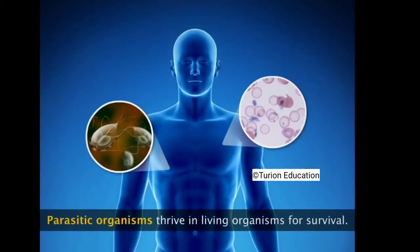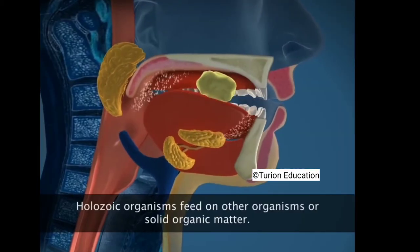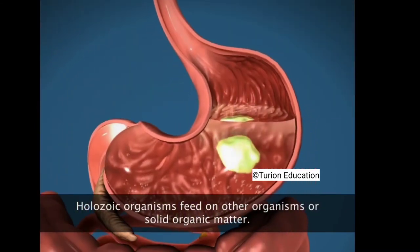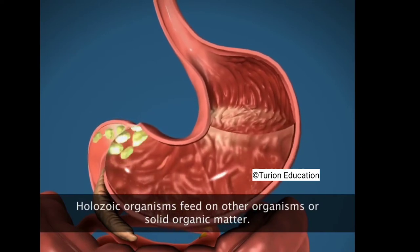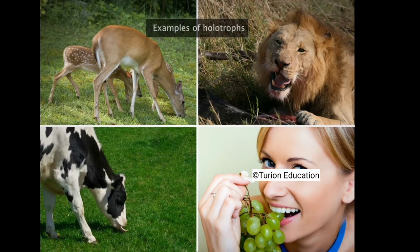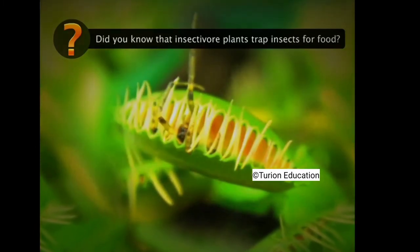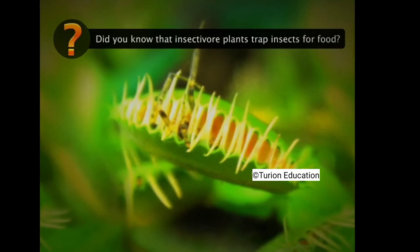Parasites are organisms that live on or in the body of another organism, from which they obtain nutrition. Organisms of the Giardia species and malaria-causing Plasmodium species are examples of parasites. Holozoic organisms feed on other organisms or solid organic matter; the organic substances are digested, absorbed, and then assimilated. Higher animals and humans exhibit holozoic nutrition. There are also carnivorous plants that trap insects and protozoans for food — these are called insectivore plants.